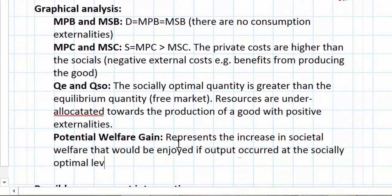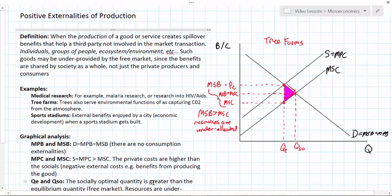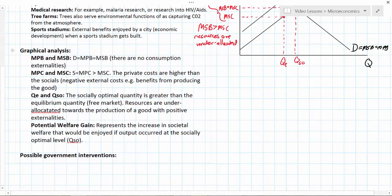In the case of any of these examples of positive externalities, society would be better off if more of the good were produced than what is achieved in the free market. Medical research is under-provided because of the positive externalities arising from its production. Tree farms are under-provided because they provide environmental benefits that cannot be charged for by producers. Sports stadiums are another example — cities enjoy external benefits in the form of local economic development and jobs created in industries beyond the stadium itself. These goods would all be under-provided by the free market.